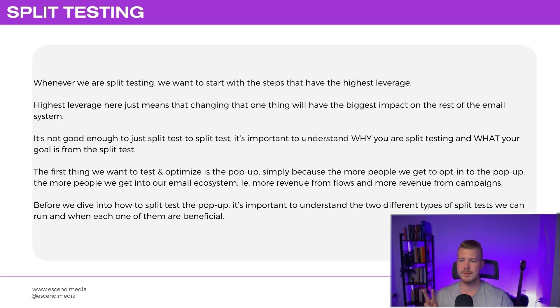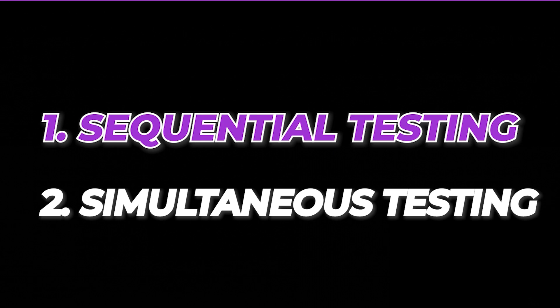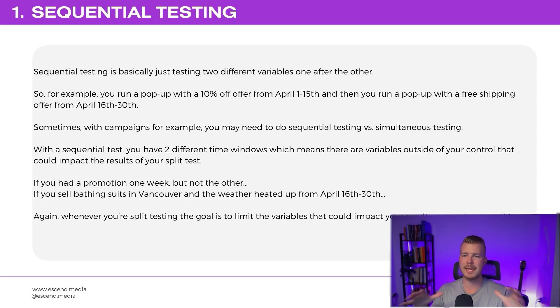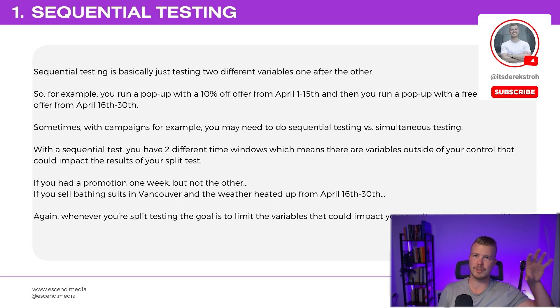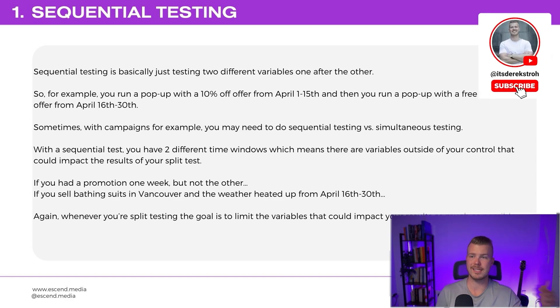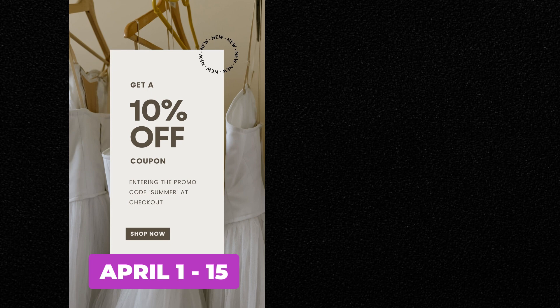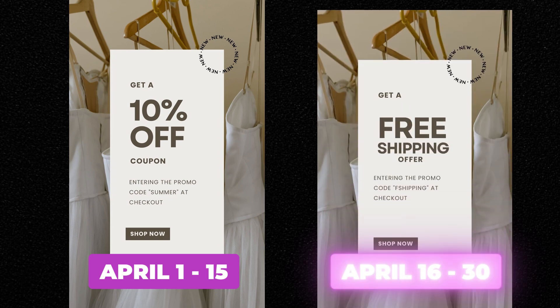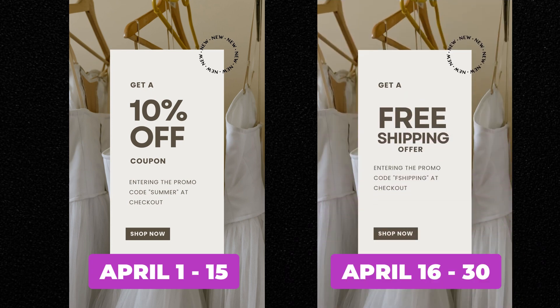The two types are sequential testing and simultaneous testing. Sequential testing is testing two different variables one after another in a sequence — for example, running a pop-up with a 10% offer from April 1st to 15th, and then running a pop-up with a free shipping offer from April 16th to 30th.